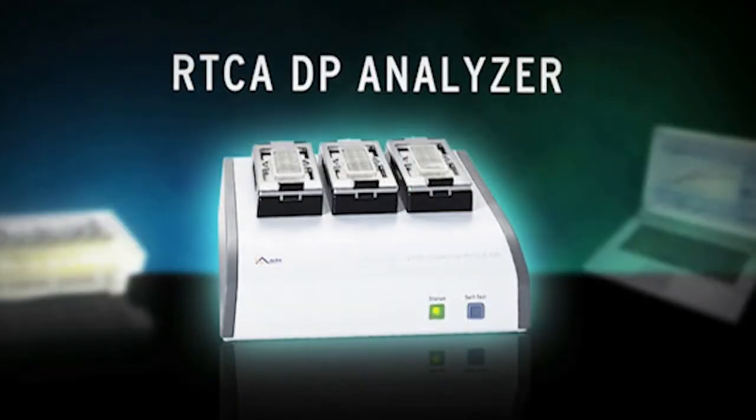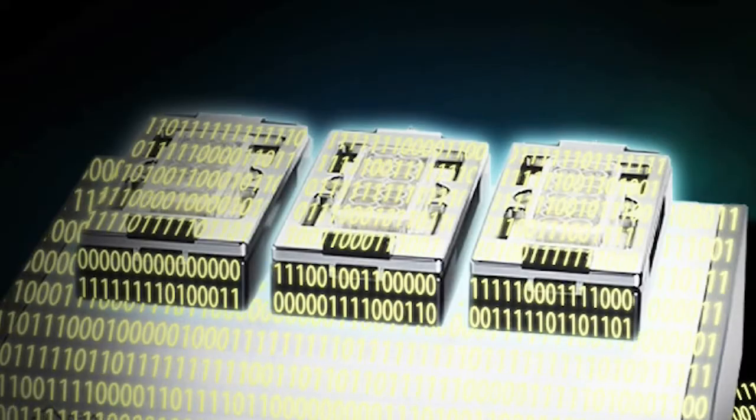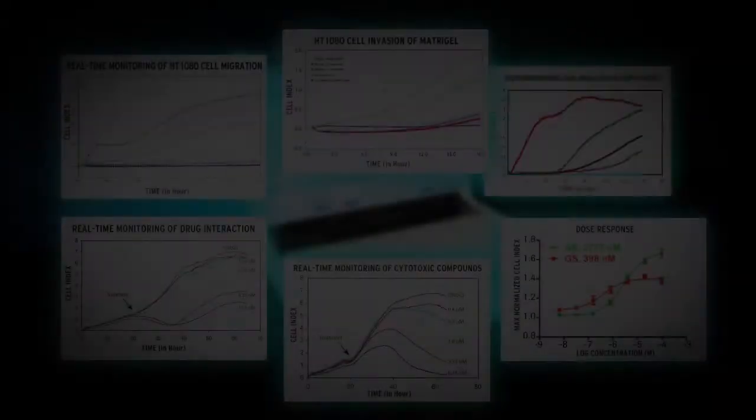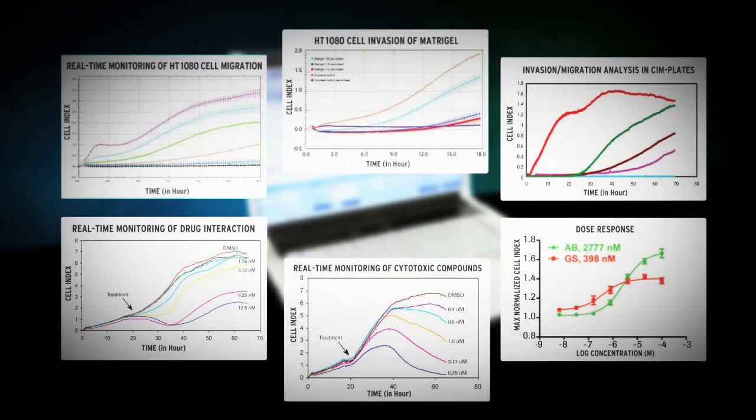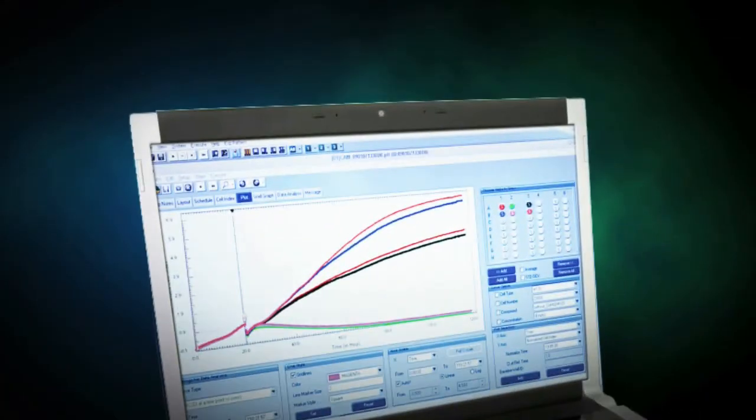Because cells remain viable, repeated measurements are possible, providing an uninterrupted stream of information throughout an experiment. The Acceligence system creates dynamic kinetic profiles specific to each sample, giving important insight into differing migration and invasion properties.